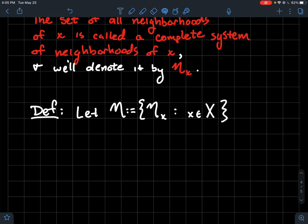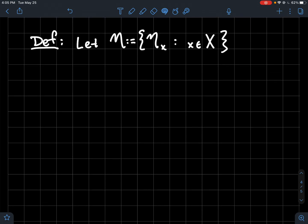So the new thing: let's let N, fancy N without a subscript, be the set of all complete systems of neighborhoods for points in my set X. So what we'll do now is we'll say that the pair, the set X with N, we'll call that a neighborhood space.